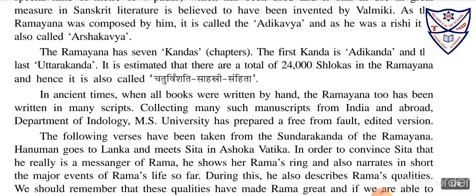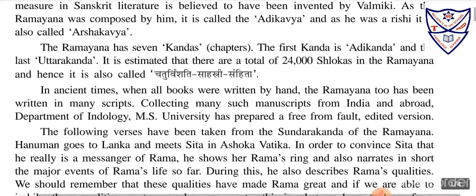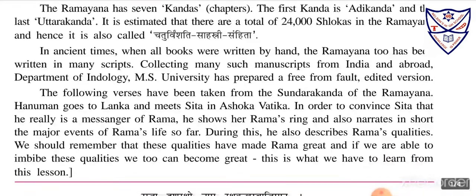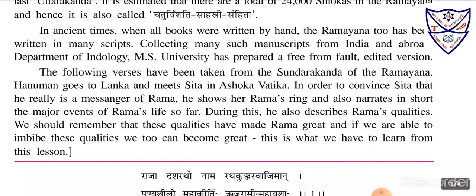Because he created this poem, Ramayana is written by Valmiki, and so it is also considered the Adi Kavya. As he was a Rishi, it is also called Arsha Kavya — meaning Rishi's poetry. The Ramayana has seven Kandas, or chapters. The first is Adi Kand, meaning Bal Kand — the childhood stories. The last is Uttar Kand, covering events after the war between Rama and Ravana. It is estimated that there are a total of 24,000 Shlokas in the Ramayana, and hence it is called Chaturvinshati Sahasri Samhita.